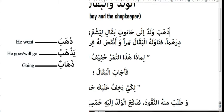The masdar is the verbal noun. A masdar is a noun derived from a verb that shows action but is not itself a verb. Like in English we have '-ing' forms. The masdar of thahabah is 'dhahab,' meaning 'going.' Whenever you translate a masdar into English, you add '-ing' to the translation.